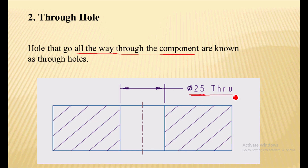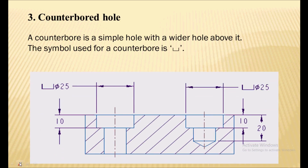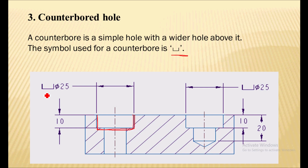It is indicated as 525 by 525 through. Next is the counter bore hole. A counter bore is a simple hole with a wider hole above it. Initially, the simple hole is first drilled, then the counter bore hole is created. Here the counter bore hole is 525 mm diameter at a depth of 10 mm. This hole is seen in applications where a bolt is to be placed.